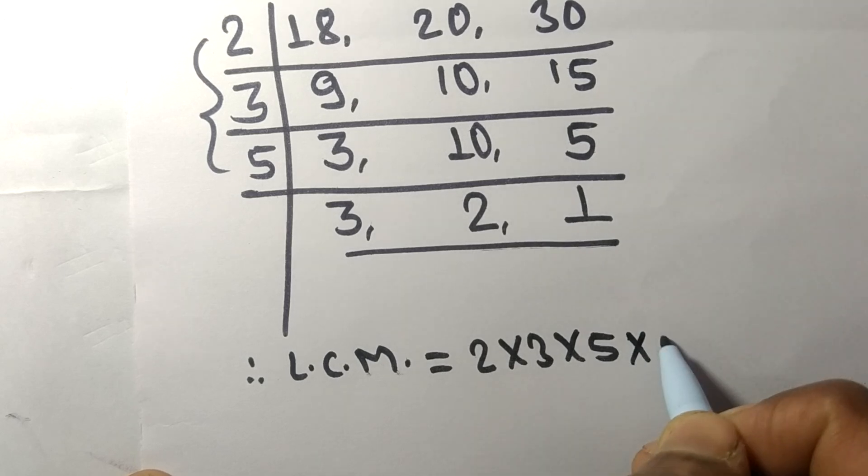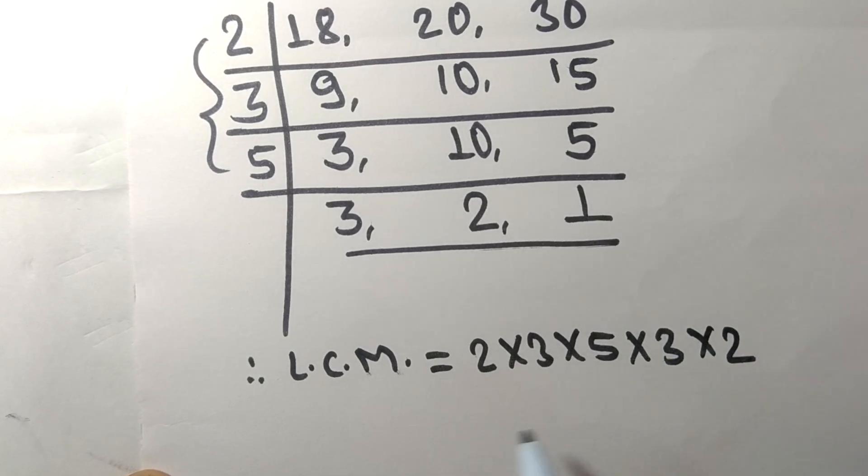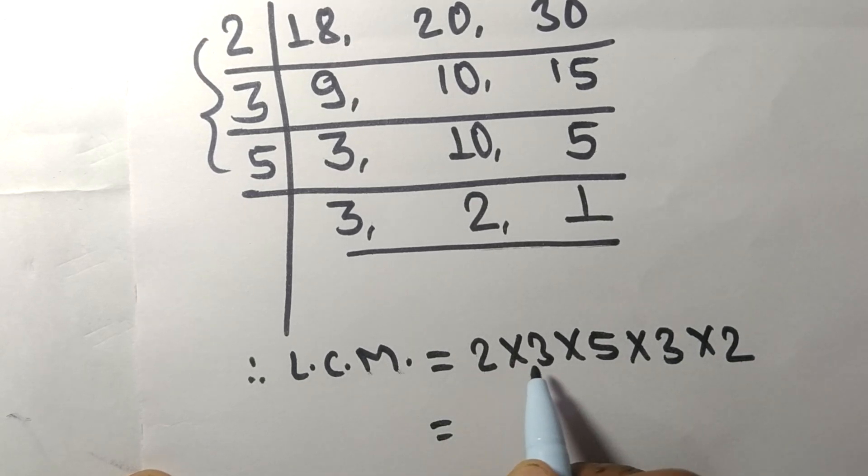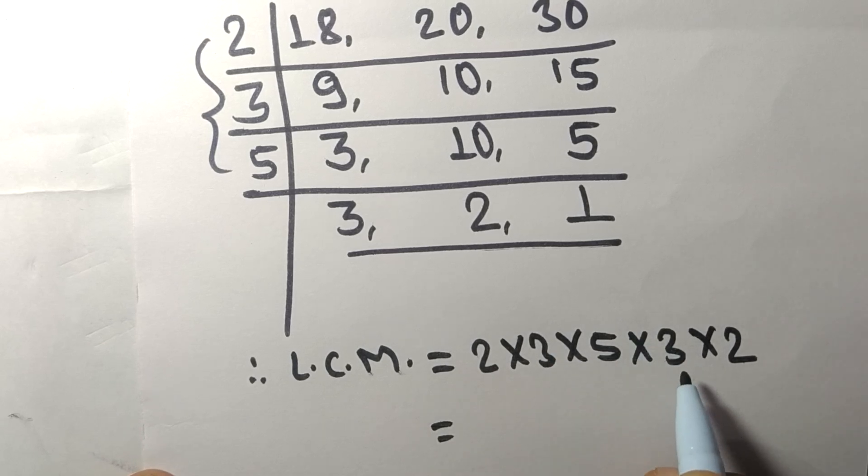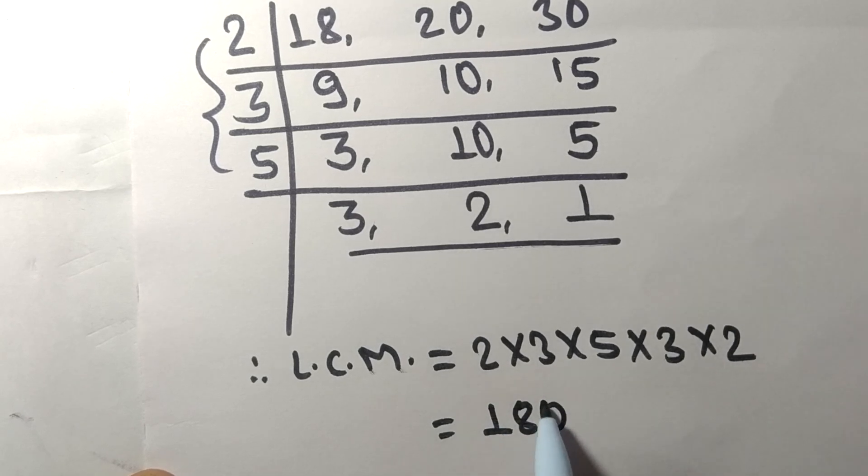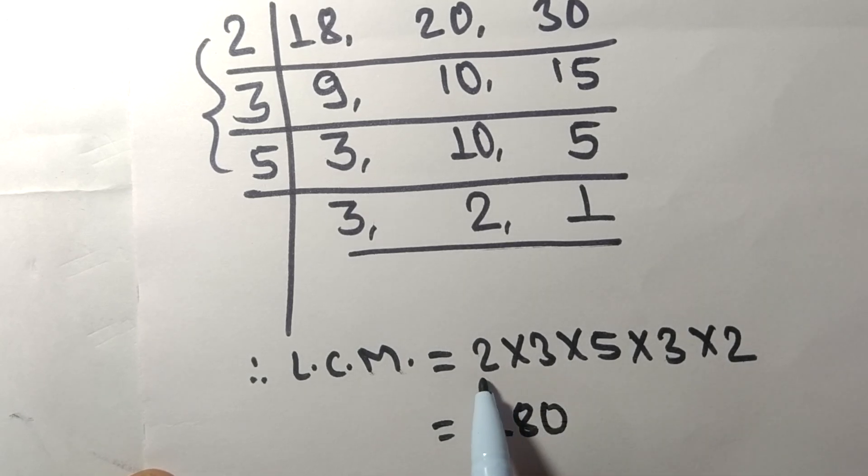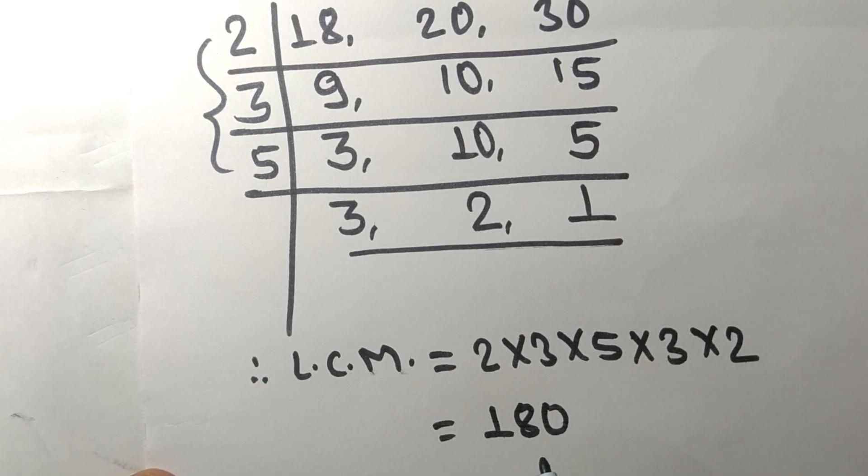So 2 times 3 means 6, 6 times 5 means 30, 30 times 3 means 90, 90 times 2 means 180. So by multiplying all these numbers we got 180.